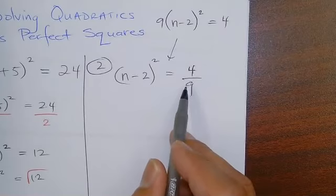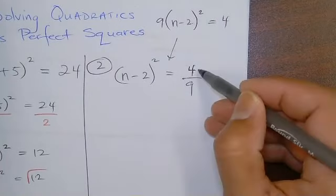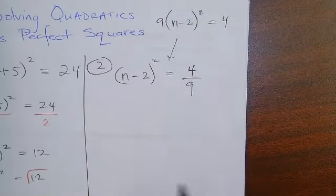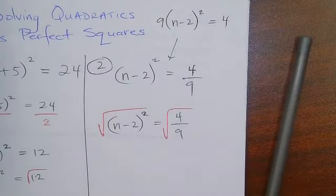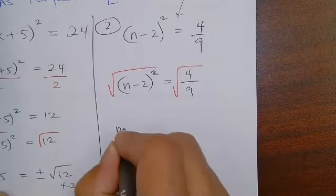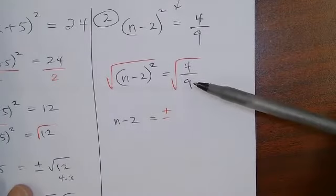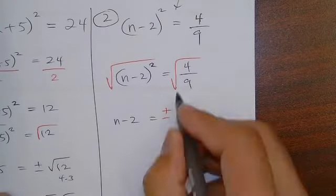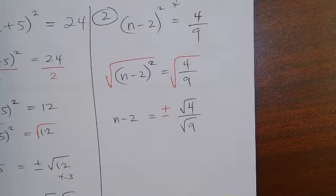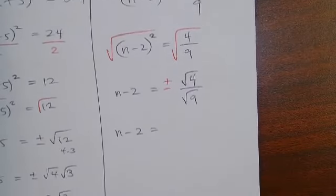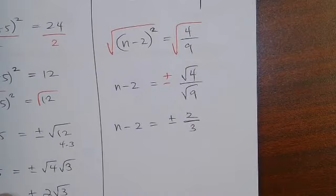We don't want a fraction on this side. When you have a fraction, some of them are going to work out nice and some are not. This one's going to work out nice because 4 is a perfect square number and 9 is a perfect square number. So when you take the square root of both sides, when you have a fraction the square root goes to both numbers. So we have n minus 2 equals plus or minus 2 over 3 — the square root of 4 is 2 and the square root of 9 is 3.